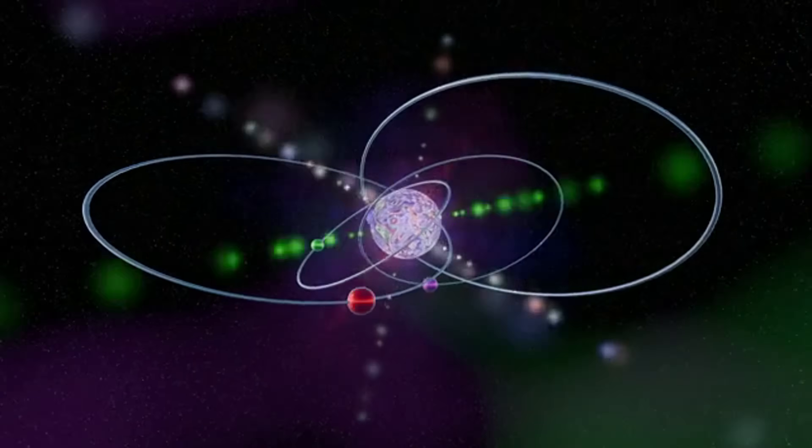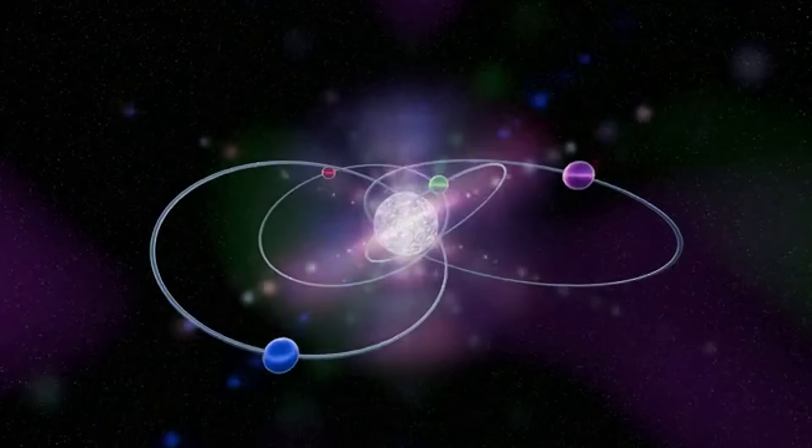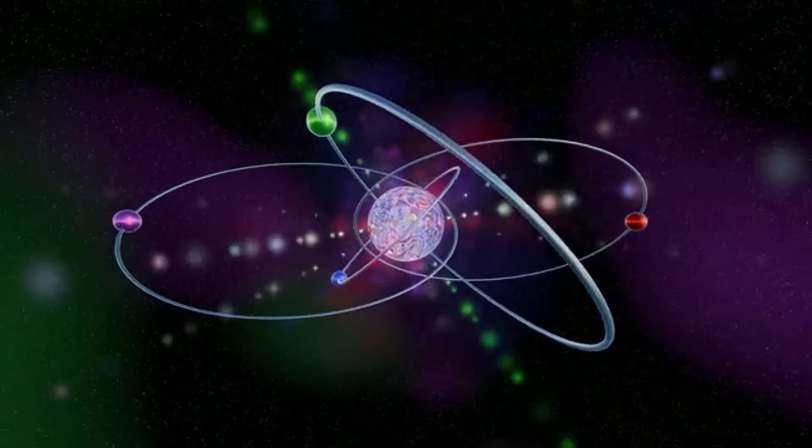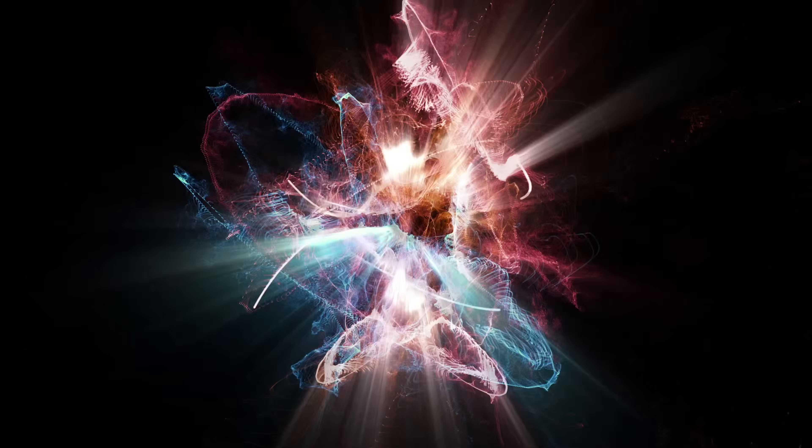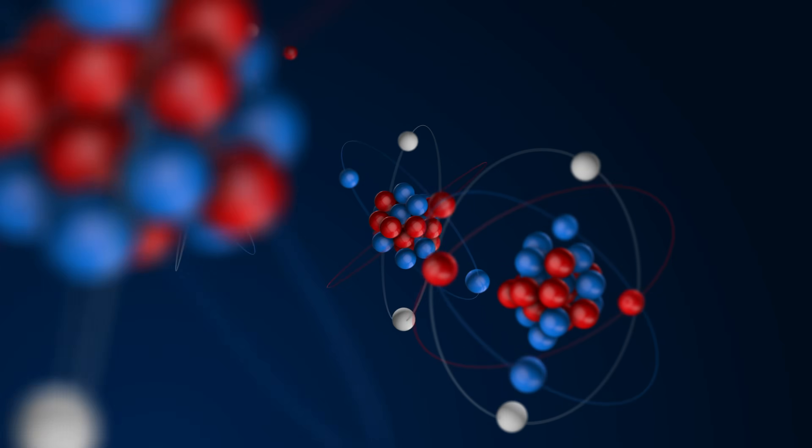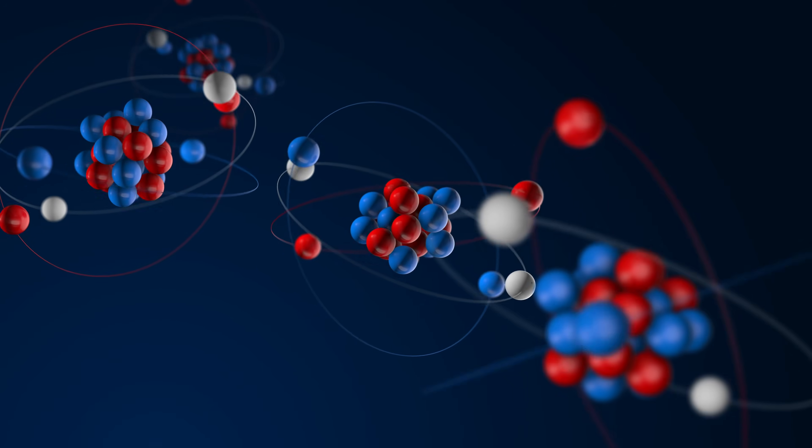So how do heavy atoms manage to contain multiple protons and neutrons simultaneously? To answer this, we dive deeper into quantum mechanics and the concept of energy orbitals. In a heavy atom, protons and neutrons, collectively called nucleons, coexist. When two protons, both positively charged, get close, the electromagnetic force repels them strongly.